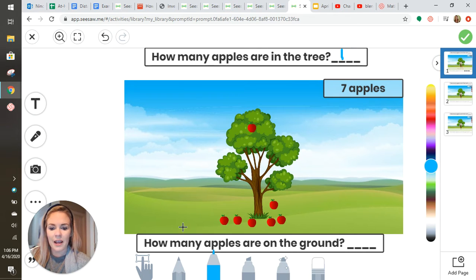The bottom question asks how many apples are on the ground. Counting one, two, three, four, five, six—so I'll write a six.